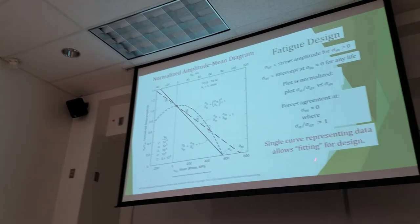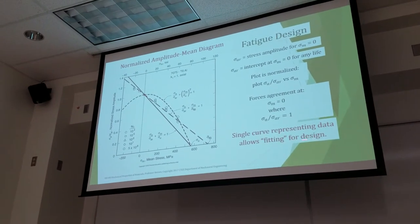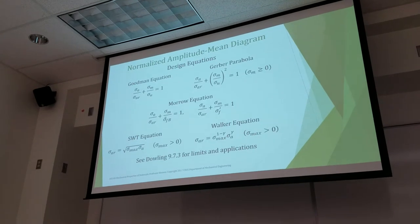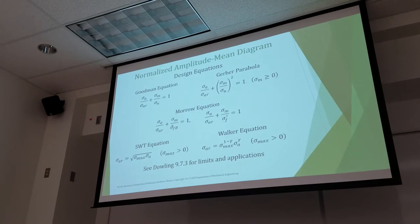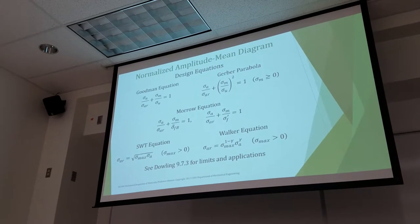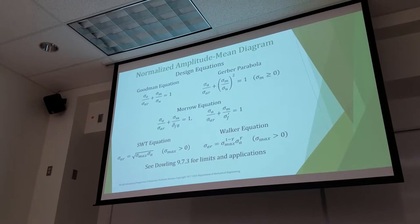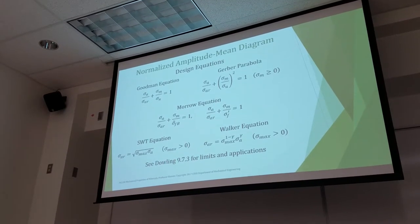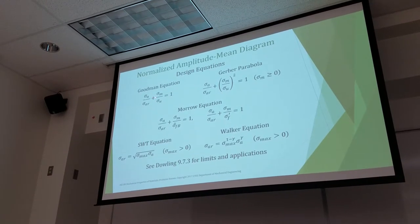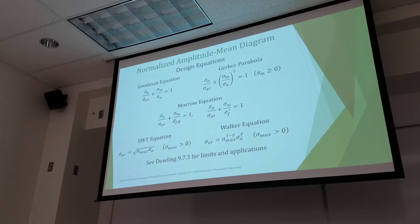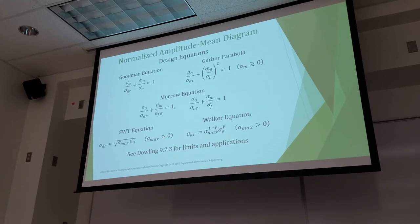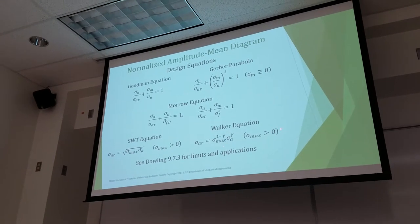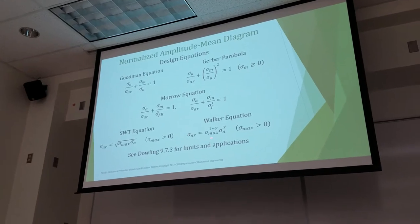So we have all these equations now. In your Dowling book he starts throwing equations at you — here's the straight line, this is the Goodman. Here's the Gerber parabola. Here's the Morrow. Here's the SWT. Here's the Walker. This one — the Walker — turns out is probably the one you should be using all the time.